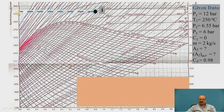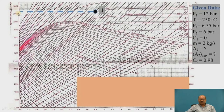Going in the upward direction, the temperature increases from 150, 200, 250 degrees and so on. The dryness fraction is represented here as x = 0.6, 0.7, 0.8, and so on. When it crosses this saturation point, you enter the superheated stage. After this point, the steam is superheated steam, and all the properties of superheated steam are considered here.